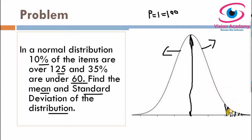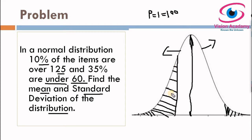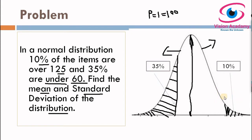The upper tail covers 50% of the probability, meaning 0.5 to the right side and 0.5 to the left side. Out of that 50%, 10% is covered on the upper tail side. On the other side, 35% are under 60, which means below the mean. So in the lower tail, 35% are under 60 out of 50%. This is the shaded area — 35% is covered in the lower tail region. So 35% falls in the lower tail and 10% in the upper tail.